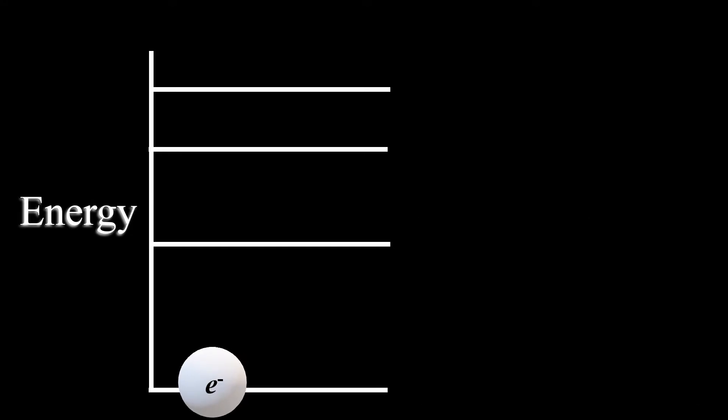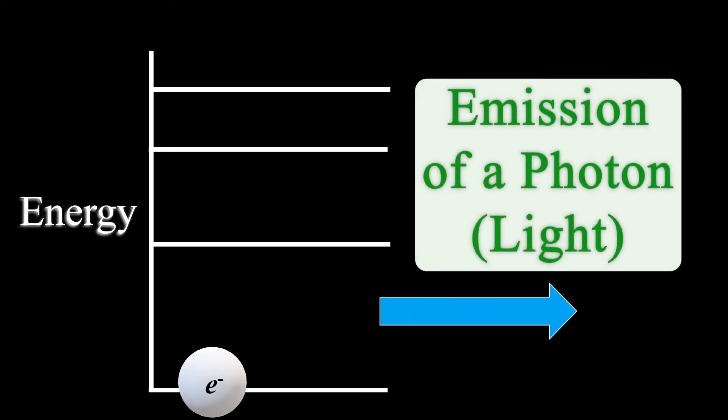This release of energy can occur via emission of a photon, or emission of light. Hence, the colors we see at a fireworks display.